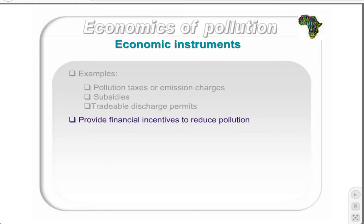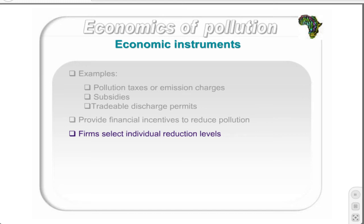Economic instruments provide financial incentives to producers to reduce their pollution levels. Furthermore, they allow individual firms to select their own level of pollution reduction rather than applying a blanket effect for all firms. Thus, firms that can easily afford to reduce pollution will pollute less than firms where the cost is higher, making this intervention relatively cost effective. In this section, pollution taxes will be discussed while tradable discharge permits will be briefly described.